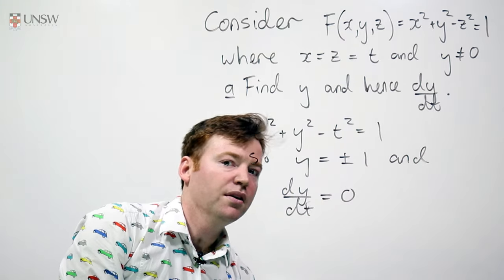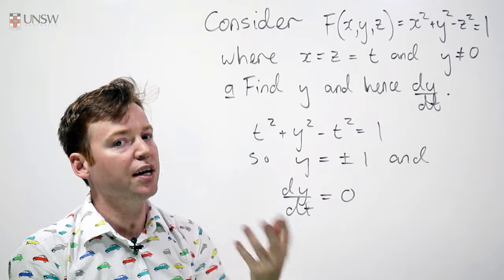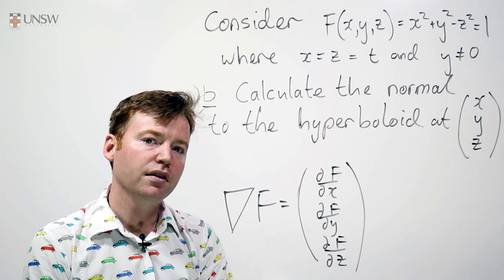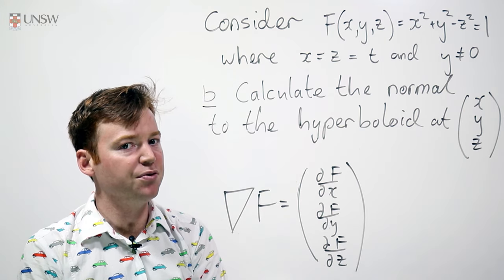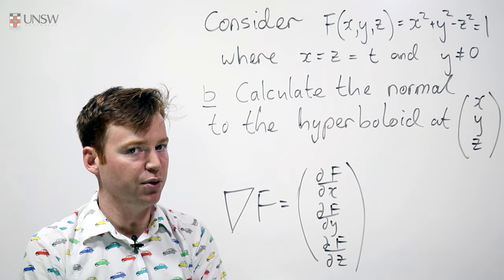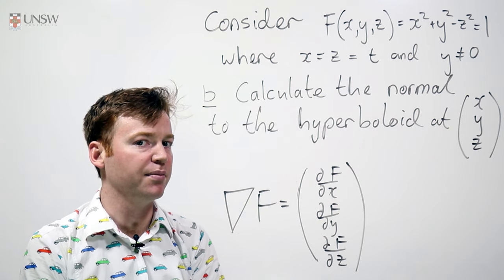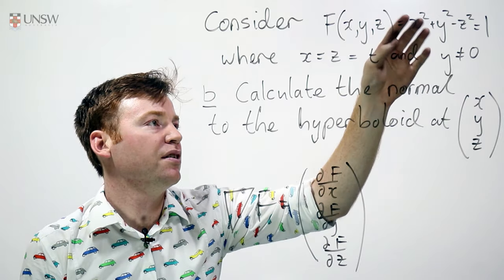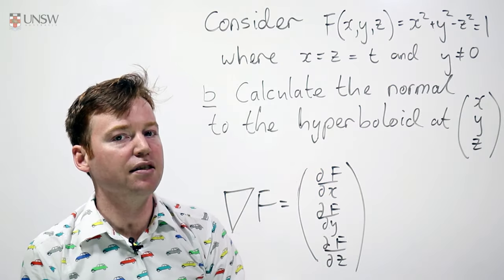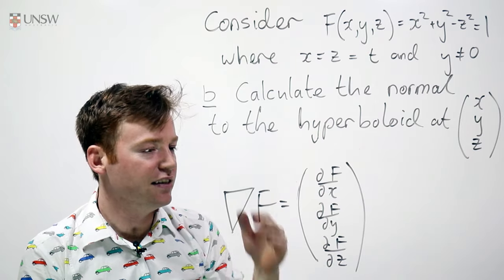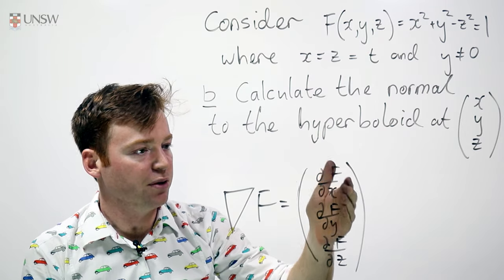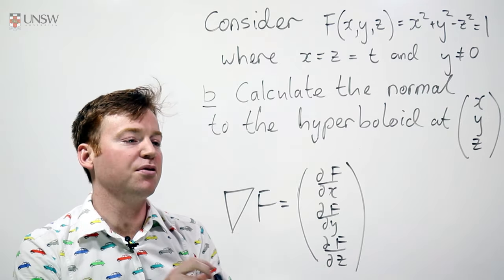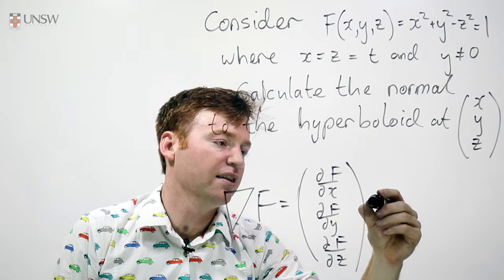Let's explore how we can do this question using the chain rule and we'll explore it in particular in a geometric sense. In part b, we're asked to find the normal to a hyperboloid. That might sound scary, but fortunately the normal to a function, which is defined in terms of some variables equals constant, is easy to find. It is ∂f/∂x, ∂f/∂y, ∂f/∂z. You don't get an easier normal to find than that.